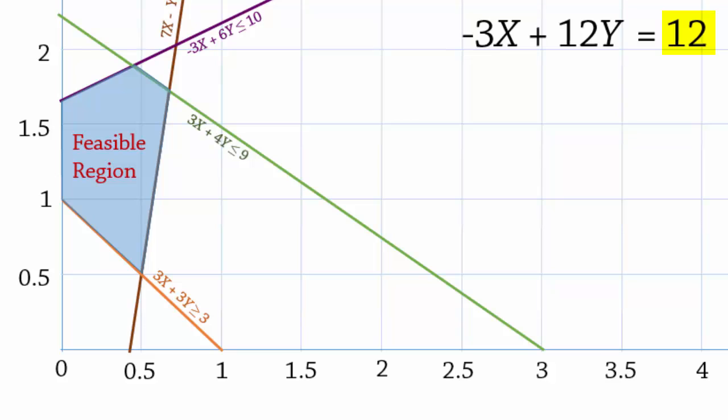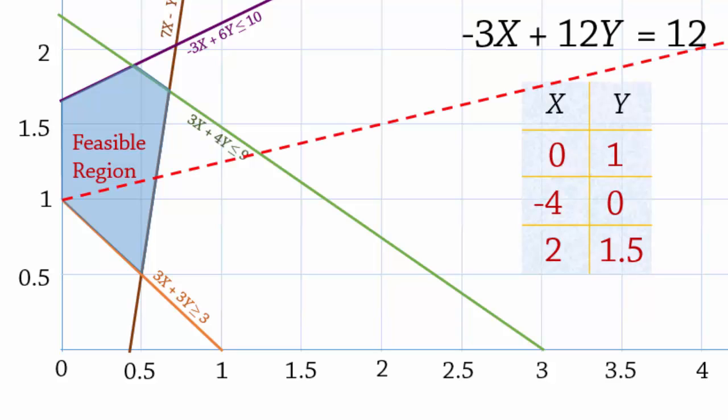Next, we'll find points to draw the objective function line. When x equals 0, y equals 1. And when y equals 0, x equals negative 4. Because of this negative 4, let's just obtain one more point. When x equals 2, y equals 1.5. So using these two points, the objective function line is this dotted line here.